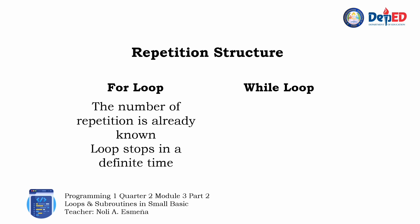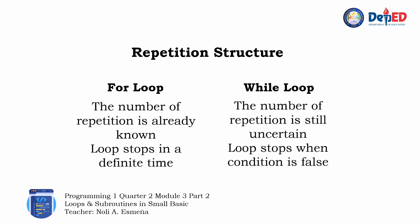In for loop, the number of repetition is already known, and the loop stops in a definite time. But in while loop, the number of repetition is still uncertain, and the loop stops when the condition is false.